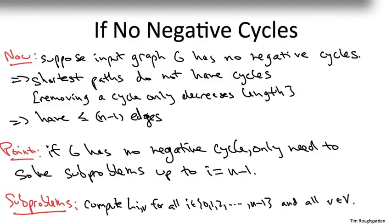And this is actually a pleasingly parsimonious collection of subproblems. It may strike you actually kind of as a lot, because there's a quadratic number, right? There's N choices for the destination V, and then I is taking on N different values.